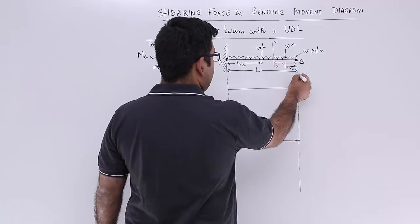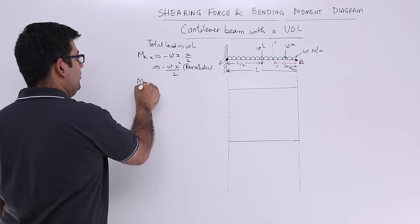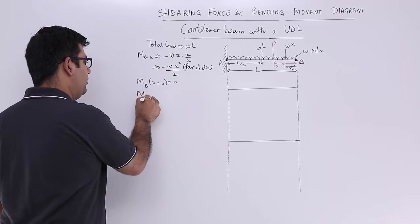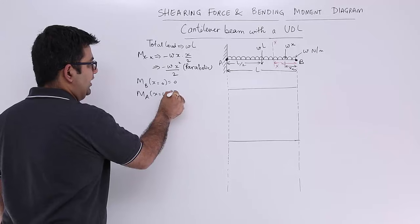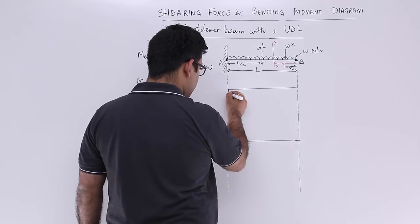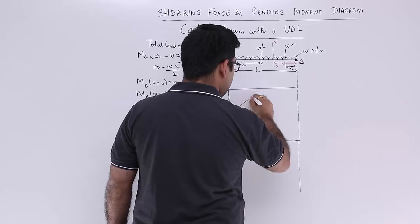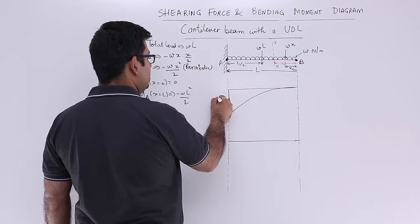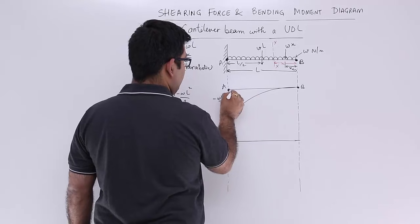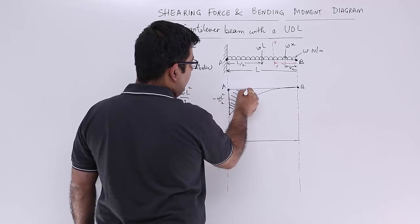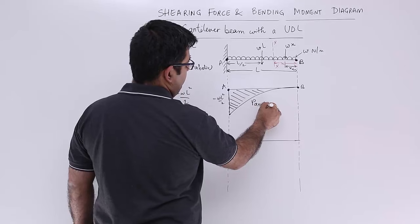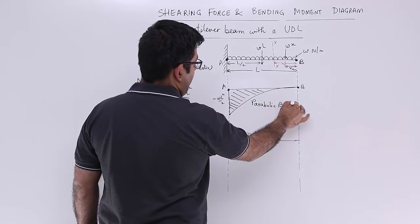This would be 0, obviously, because bending moment at B where x is equal to 0 is 0. But what would be the bending moment at A where x is equal to L? It will be minus WL square by 2. We will write down this will be a curved line. This is minus WL square by 2, this is point A and this is point B, and this is how the bending moment is varying as per the parabolic curve. So this is a parabolic BMD.